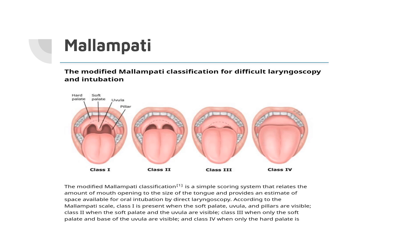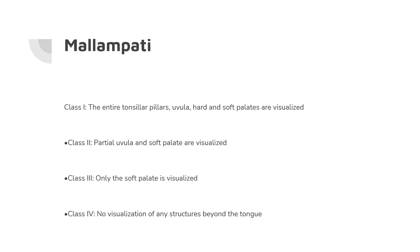The Mallampati score is the most common and most specific test used in airway assessment. It is divided into four classes. In class 1, we can see the entire tonsillar pillars, the uvula, and the hard and soft palate. In class 2, only the partial uvula and soft palate are visible. In class 3, only the soft palate is visualized. In class 4, no structures beyond the tongue can be seen.